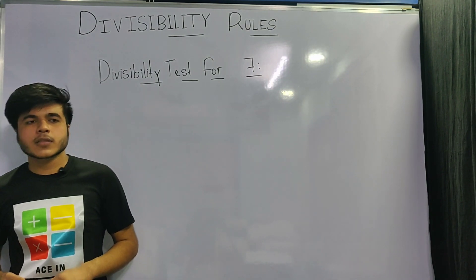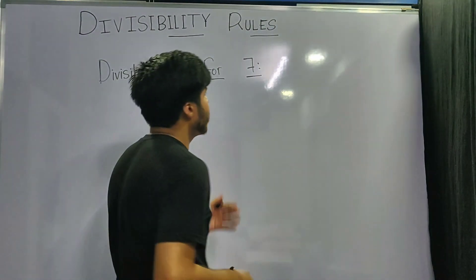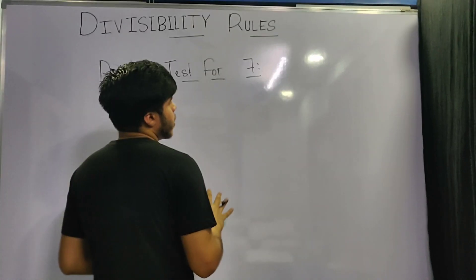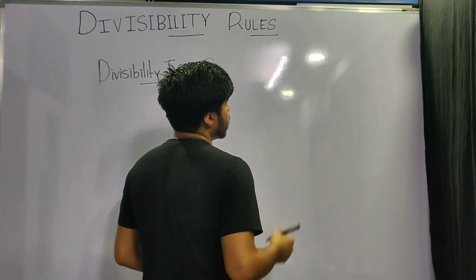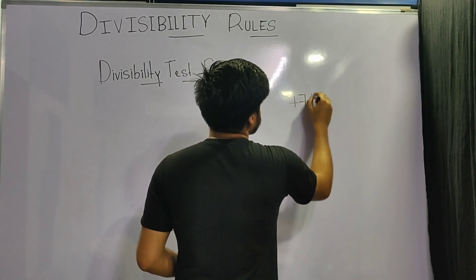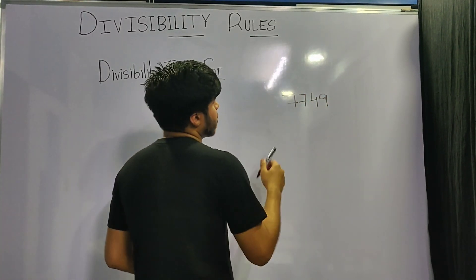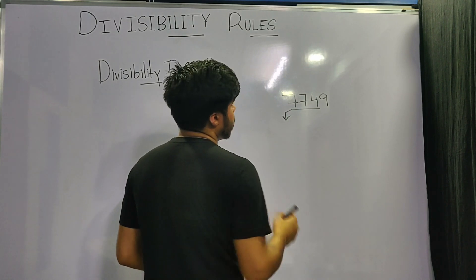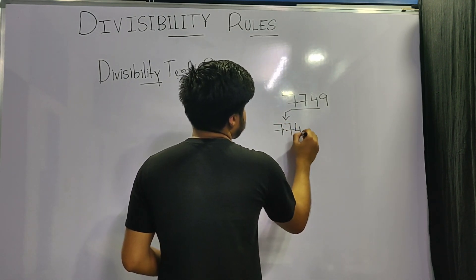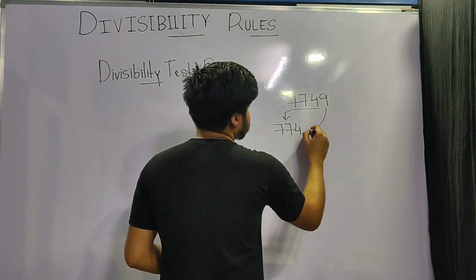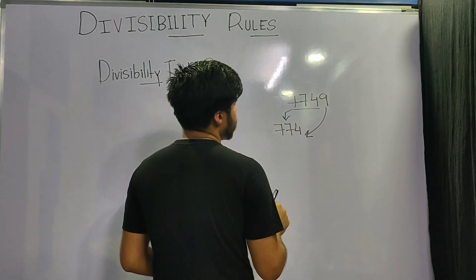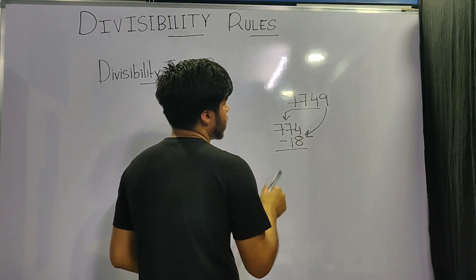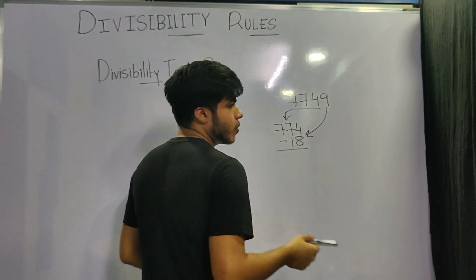Moving on to the number 7 — most of you may not know how to check divisibility by 7, so I'll explain it clearly. Suppose you are given the number 7749. The rule says to separate the number from its unit digit, giving you 774. Then subtract twice the unit digit of the original number — that is, 2 × 9 = 18 — from 774.